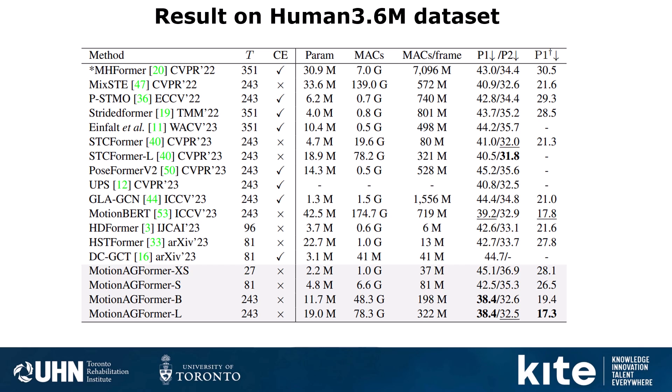The last column shows P1 error when the input 2D estimation has no noise — using ground truth 2D obtained by projecting 3D coordinates into 2D using camera projection on Human3.6M. In that case, Motion AGFormer Large achieves 17.3mm error, which is state-of-the-art performance.